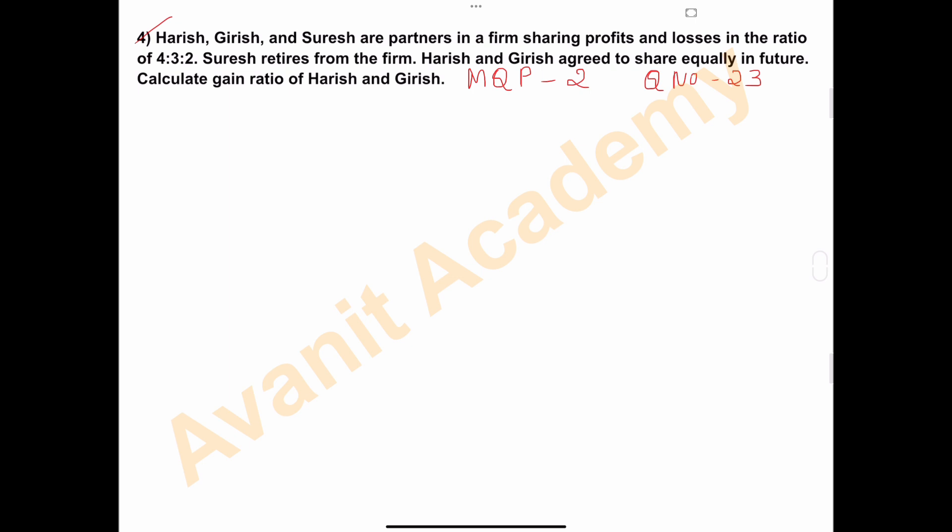Harish, Girish, and Suresh are partners in a firm sharing profits and losses in the ratio of 4:3:2. So there are three partners—Harish, Girish, and Suresh—sharing their profits and losses in the ratio of 4:3:2. Suresh retires from the firm.